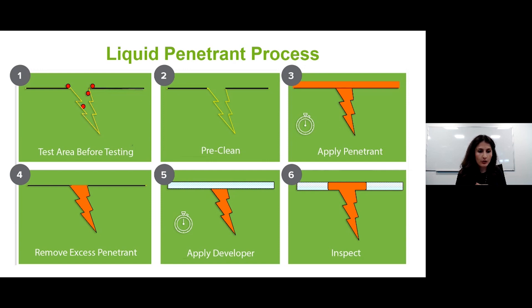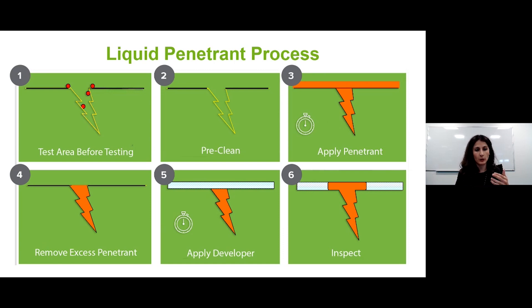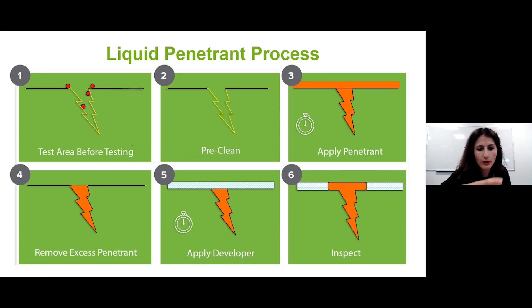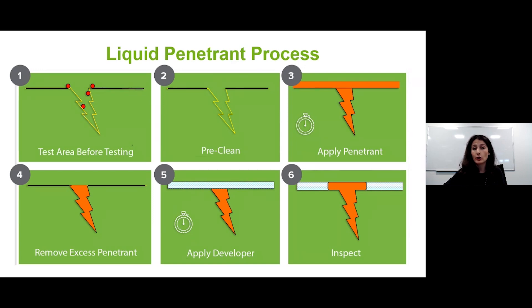Step two: after you get the component, you'll want to clean it. The best results in penetrant testing come from a cleaned part — this is potentially the most important step of the liquid penetrant process. There are contaminants in those cracks and possible indications, and if the part's not cleaned properly then there's a chance that any indication could be missed or the part being inspected might not have the results you want.